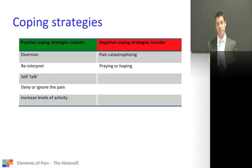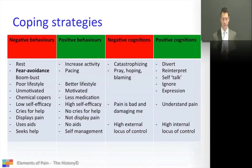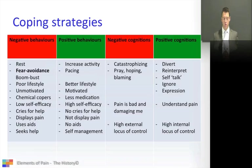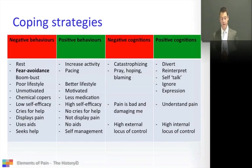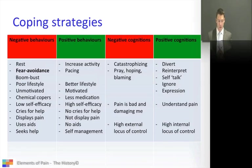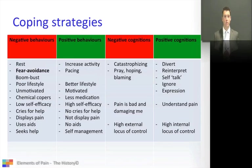Negative coping strategies are the pain catastrophizers and those that pray and hope to get better. I've put all the behavioral cognitions and strategies into negative behaviors, positive behaviors, negative cognitions, and positive cognitions — so you can consider these when you see a patient and decide whether they have the ability to cope or whether they need to be given those abilities.